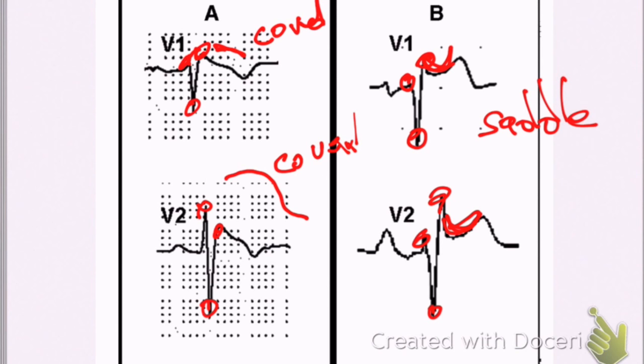So coved and saddle appearance. There's a couple of different ones. And then there's another type which looks very similar to normal, but RSR, ST segment elevation, cove type, saddle type. These are Brugada syndrome.